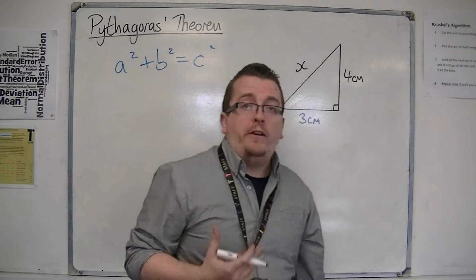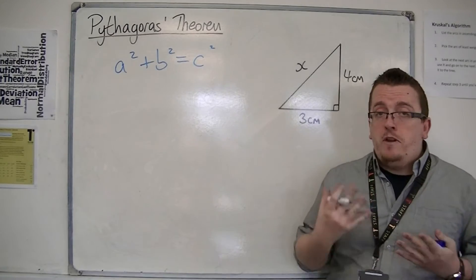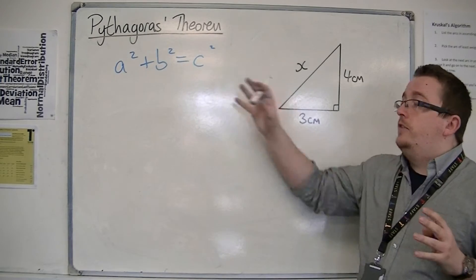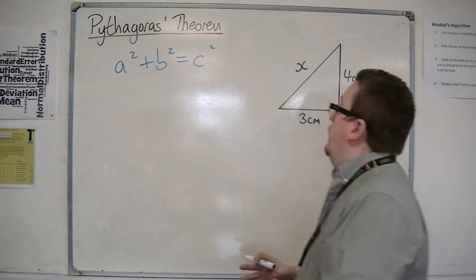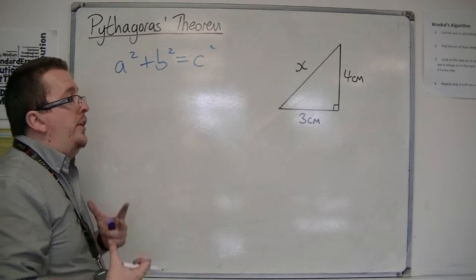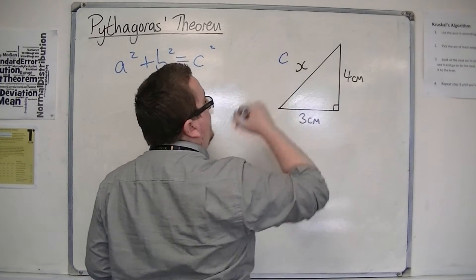Now, the first thing that you're going to want to do is to label the triangle. This is very important because you want to make sure that you're getting the right sides correct into the formula. So, C is always the hypotenuse, so it's always the side that is opposite the right angle, so that's going to be C.